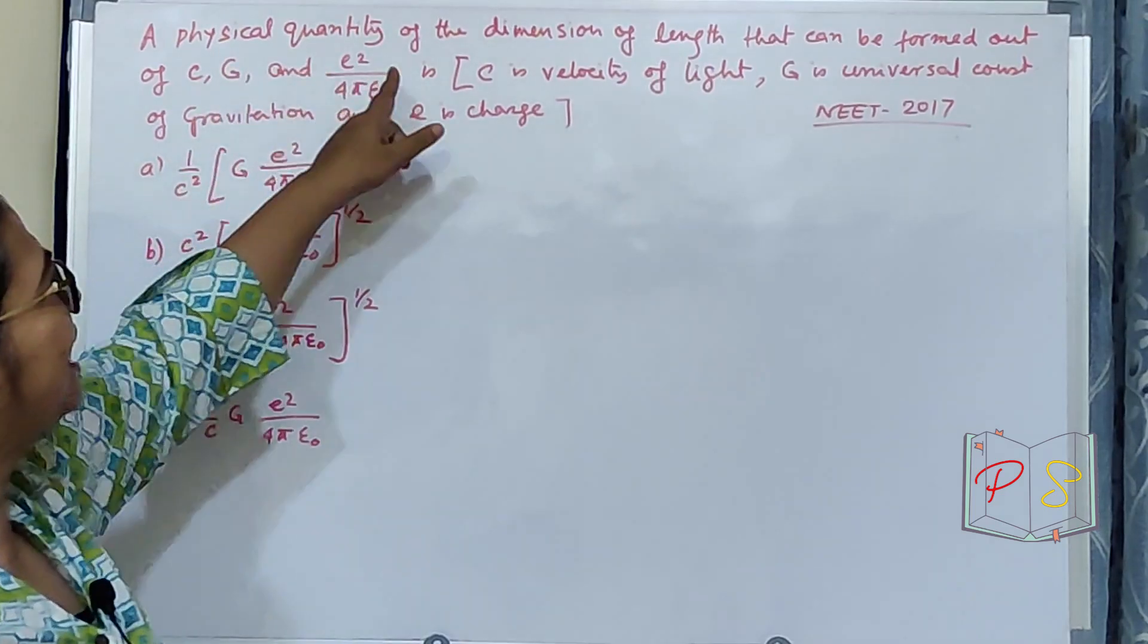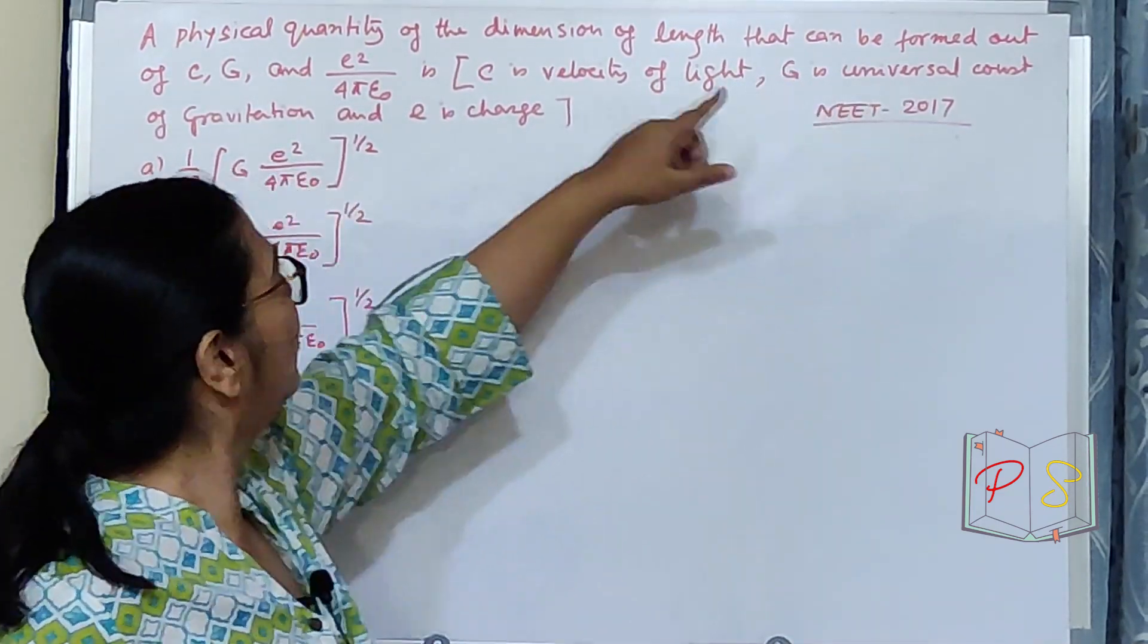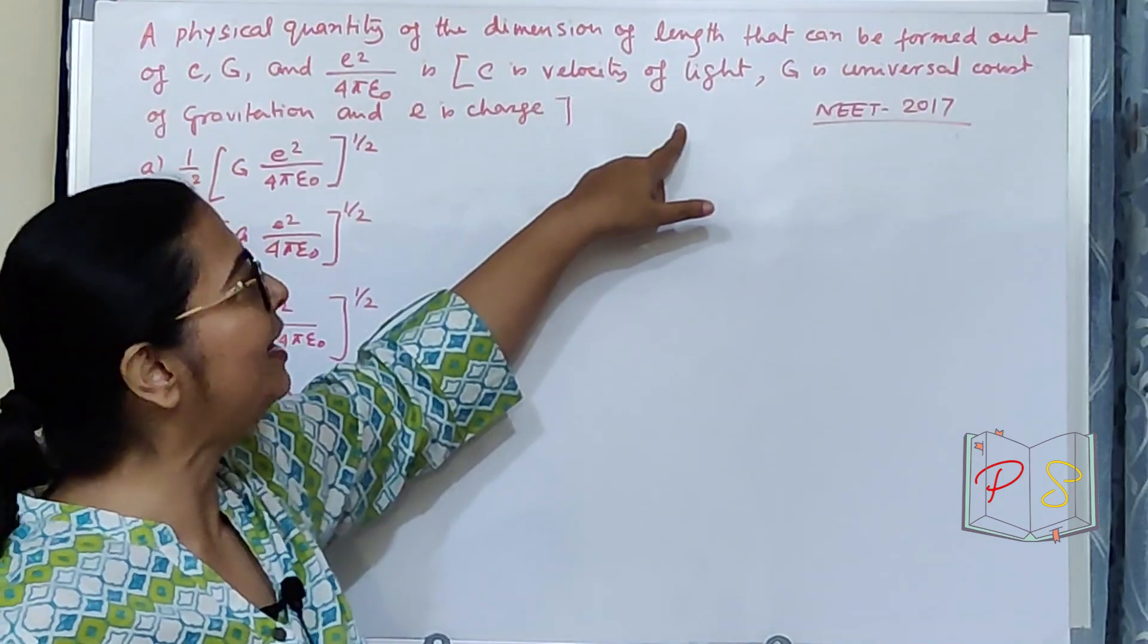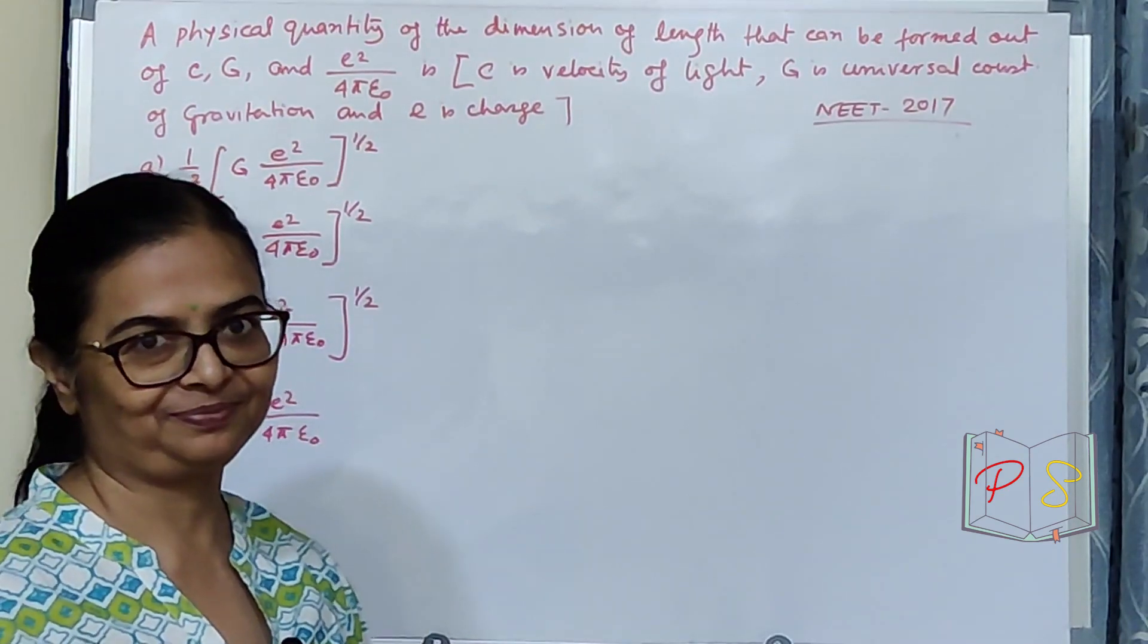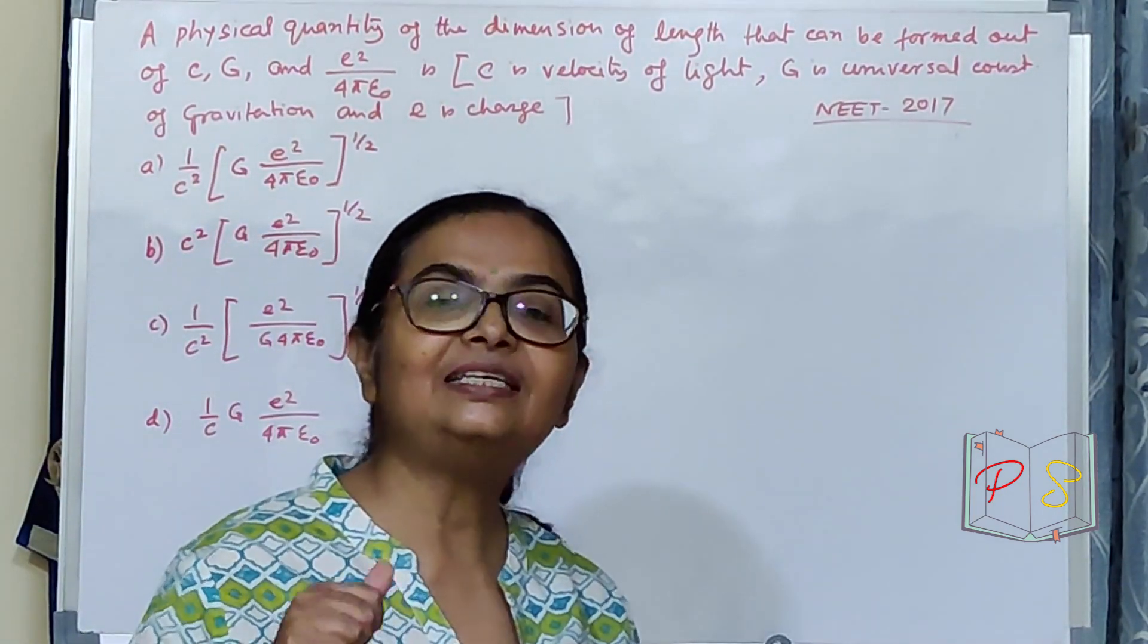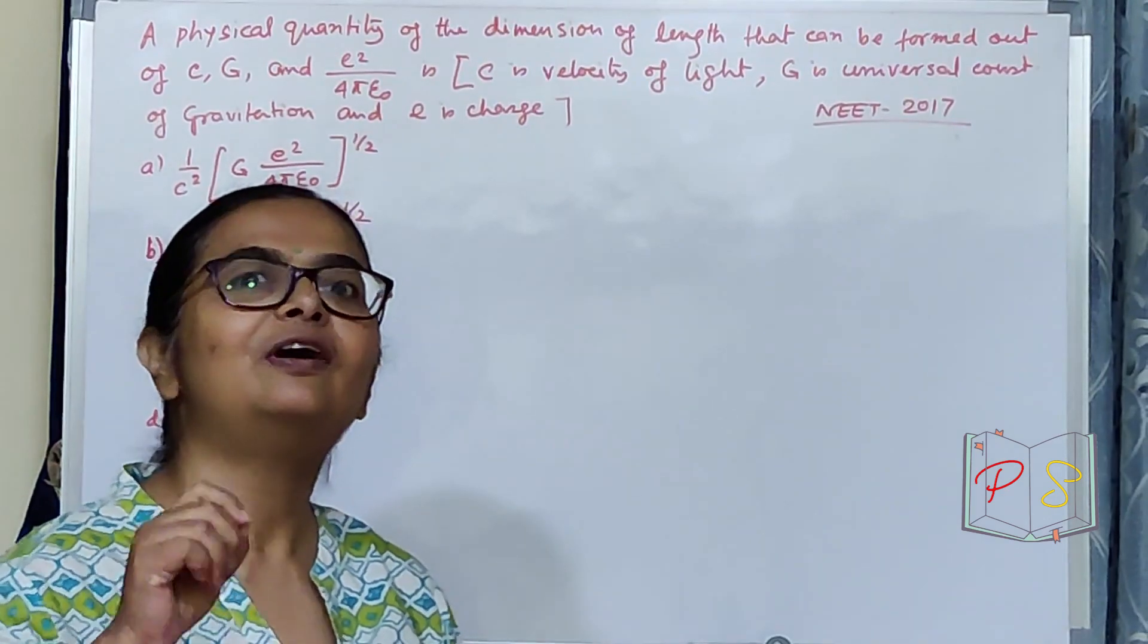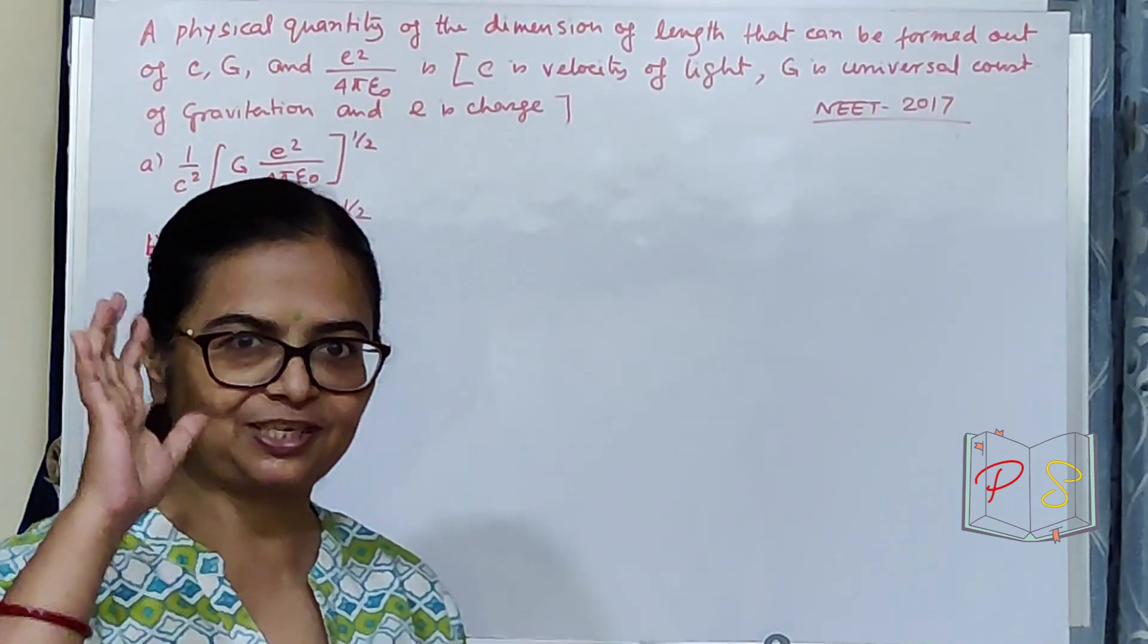A physical quantity of dimension of length L that can be formed out of C, G and E square upon 4 pi epsilon naught where C is velocity of light, G is universal constant of gravitation and E is charge. To solve this question, you need to know the dimension of this, this, this and you need to apply the knowledge of Newton's gravitational law and Coulomb's electrostatic law.